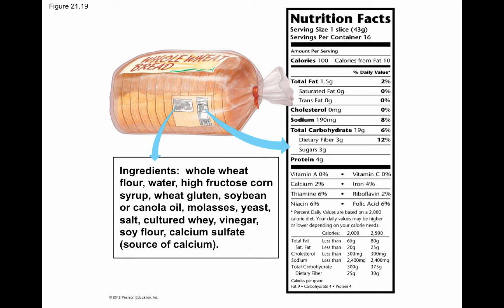One thing to be able to do is read nutrition facts on a food item. Serving size is important because we often eat more than one serving. Labels include calories, types of fats, cholesterol, sodium, carbohydrates, protein, vitamins, and minerals. The ingredient list is ordered from most to least common ingredient, so the first three things listed are what the food is mostly made of.